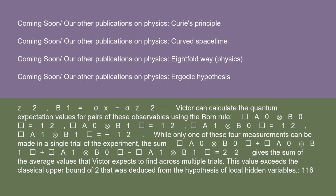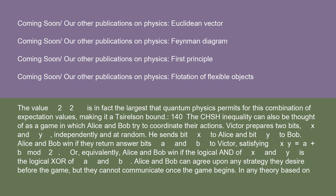Victor can calculate the quantum expectation values for pairs of these observables using the Born rule: ⟨A0⊗B0⟩ = 1/√2, ⟨A0⊗B1⟩ = 1/√2, ⟨A1⊗B0⟩ = 1/√2, ⟨A1⊗B1⟩ = −1/√2. While only one of these four measurements can be made in a single trial, the sum ⟨A0⊗B0⟩ + ⟨A0⊗B1⟩ + ⟨A1⊗B0⟩ − ⟨A1⊗B1⟩ = 2√2. This value exceeds the classical upper bound of 2 deduced from local hidden variables. The value 2√2 is in fact the largest that quantum physics permits for this combination of expectation values, making it the Tsirelson bound.